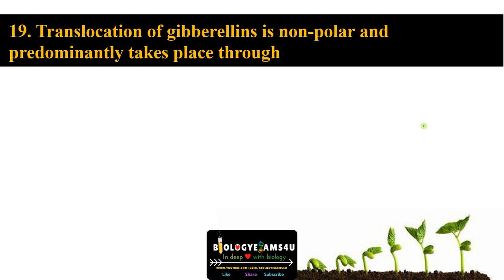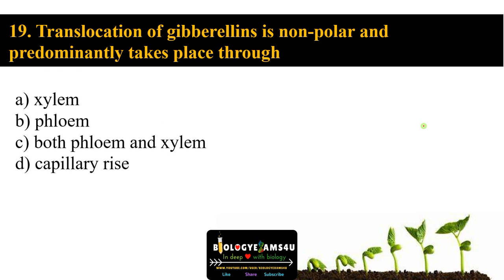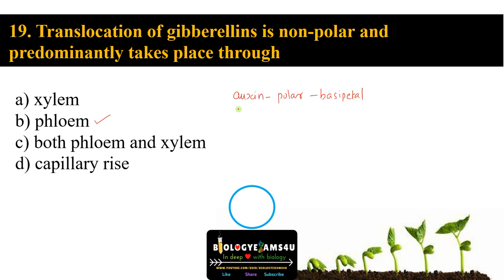Question number nineteen: translocation of gibberellins is non-polar and predominantly takes place through option A xylem, option B phloem, option C both phloem and xylem, option D capillary rise. The answer is predominantly through phloem, option B. Summary: auxin transport is polar (basipetal, top to bottom); cytokinin transport is acropetal (bottom to top); ethylene is gaseous so diffuses; abscisic acid transport is non-polar, like gibberellin.